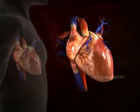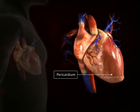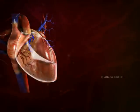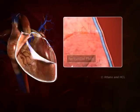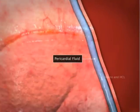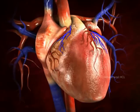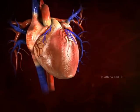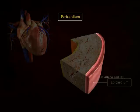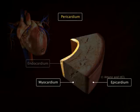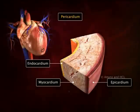The outermost covering of the heart is the pericardium, which is a double-walled membrane. The pericardial fluid flows between the two walls. The pericardium is followed by the epicardium, myocardium, and endocardium, which together constitute the wall of the heart.